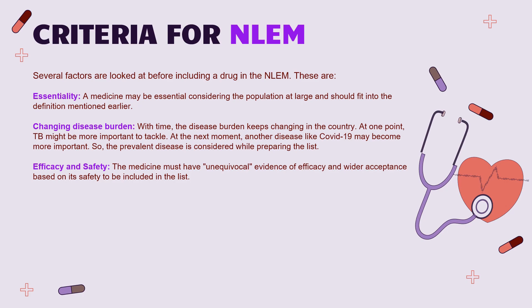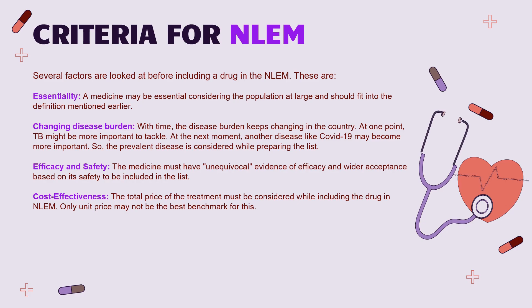The next factor is efficacy and safety. Medicine included in the list needs to have unequivocal evidence of efficacy and wider acceptance based on safety. The next criteria is being cost-effective, which is one of the most important criteria because a large part of the population, particularly in India, struggles to find quality medicine at an affordable price. Even if some medications are under patent protection but must be provided to large populations, cost-effectiveness must be considered — not just the per-unit price, but the entire course of treatment.